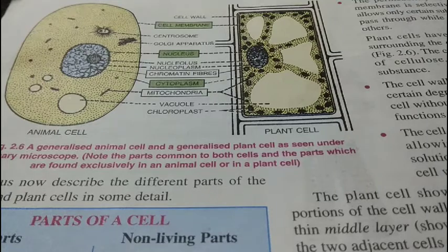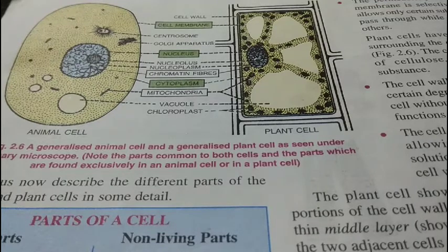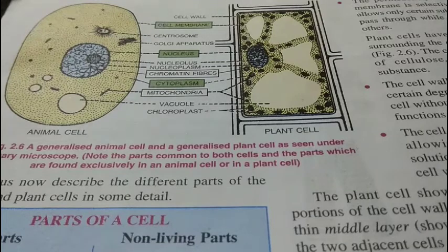The vacuoles of plant cells are generally bigger than the vacuoles present in animal cells, because the amount of food or storage substances to be kept inside the cell is greater in plant cells than in animal cells.